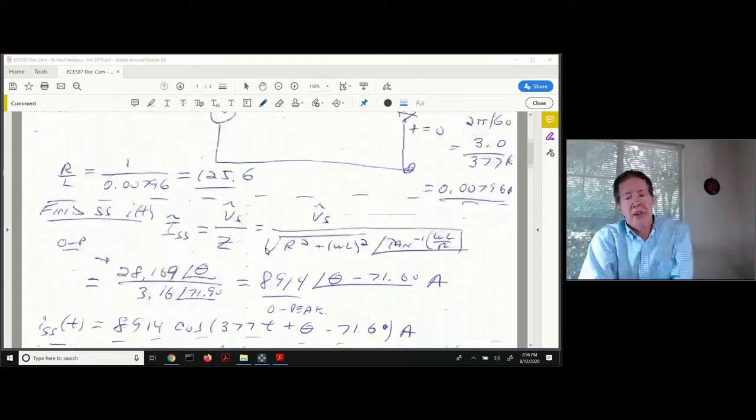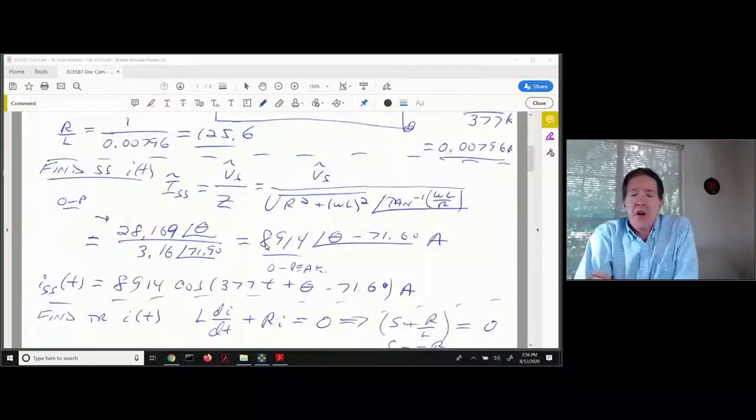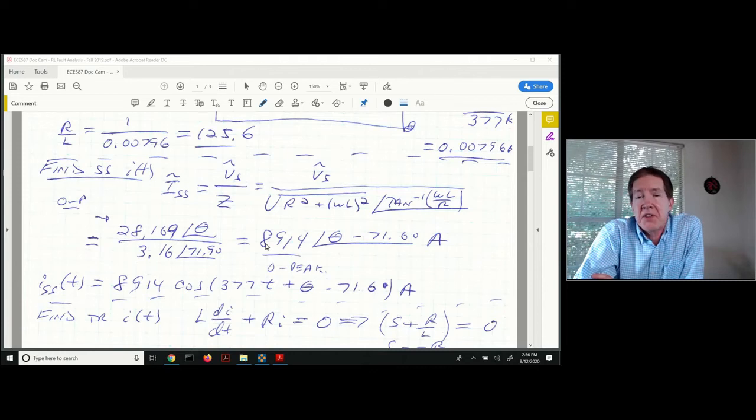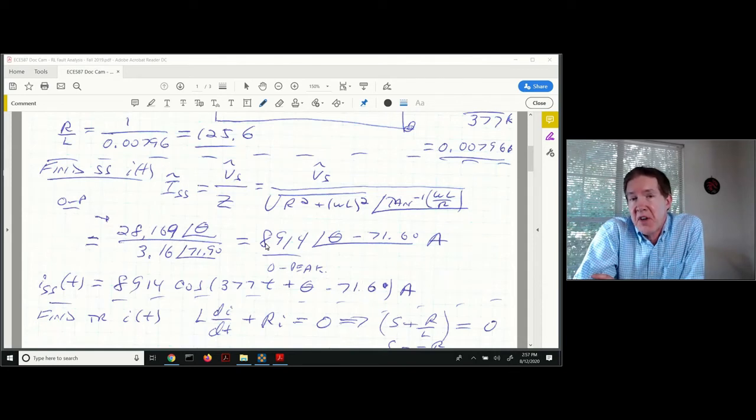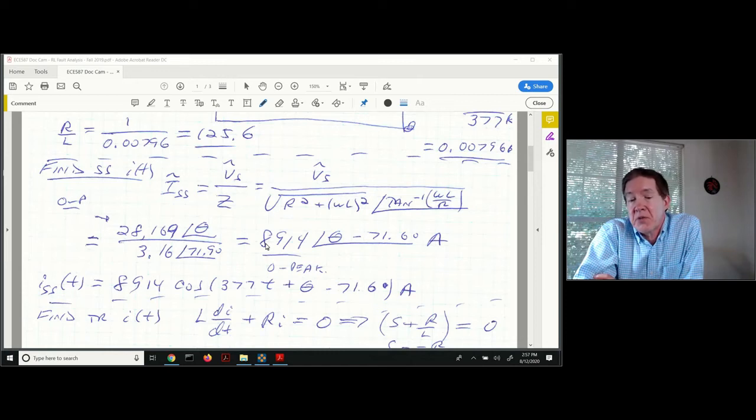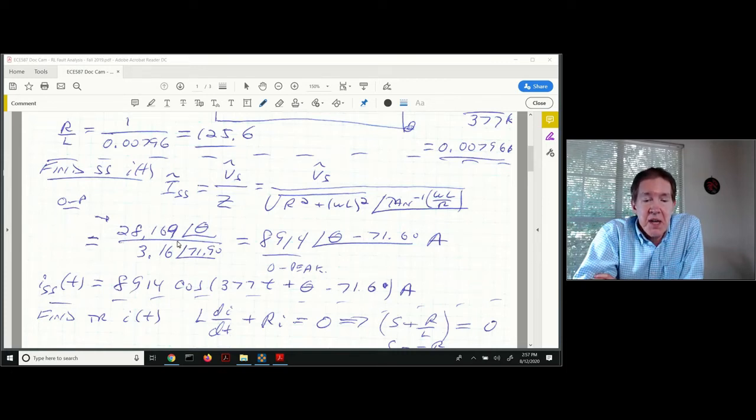The way you start this out is you calculate the steady state current. I'm going to do this with a phasor calculation. I take the phasor voltage and divide through by the magnitude and angle of that impedance. That magnitude is the square root of R squared plus omega L squared at an angle of arctangent of omega L divided by R.